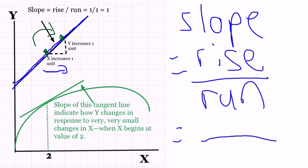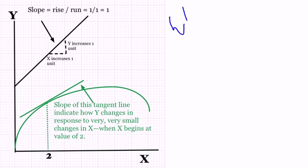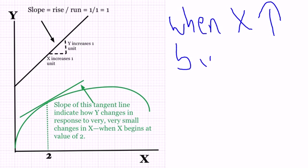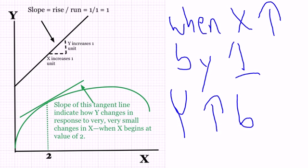x increases by 1, so the denominator is 1, and then y increases by 1 also. So 1 is in the numerator, and the slope of 1 divided by 1 equals 1, which tells us that when x increases by 1, y increases by 1.